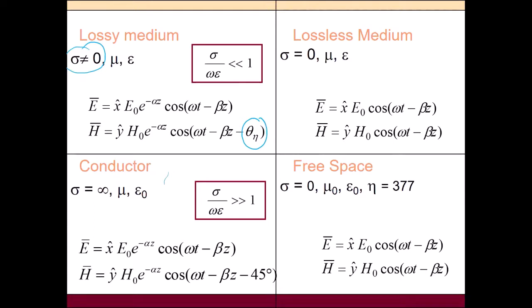And then for lossless mediums, the sigma is equal to zero. No loss. And we can see that E and H are in phase. For free space also the same. No phase difference. Both in phase. Except the difference is only the intrinsic impedance, which is 377 ohm for free space.